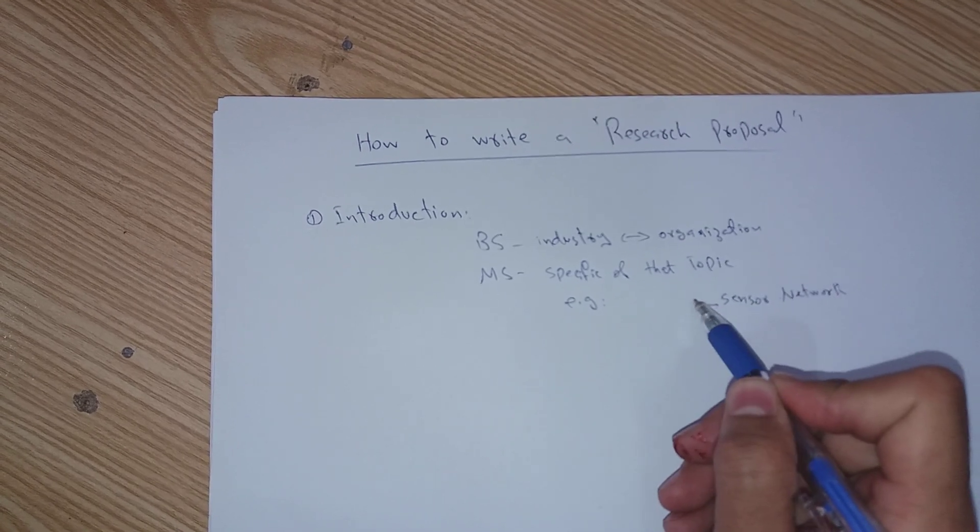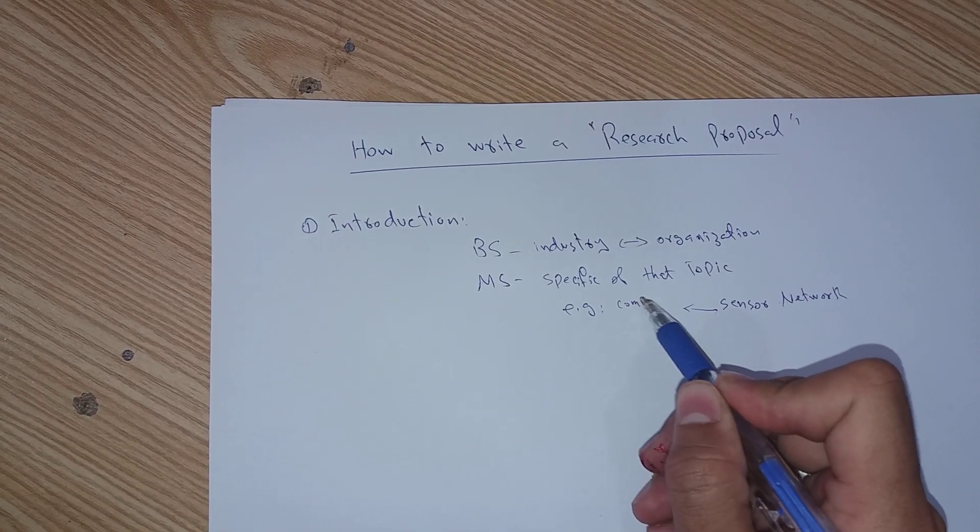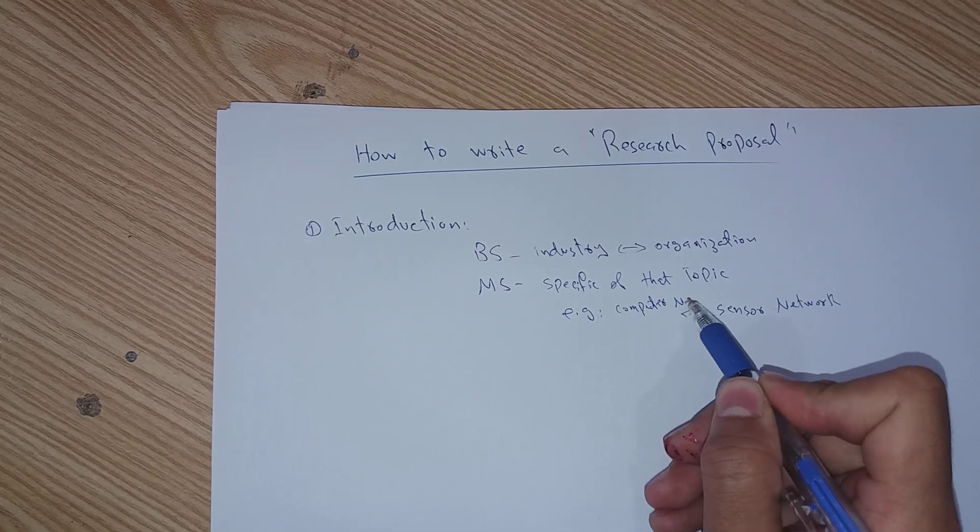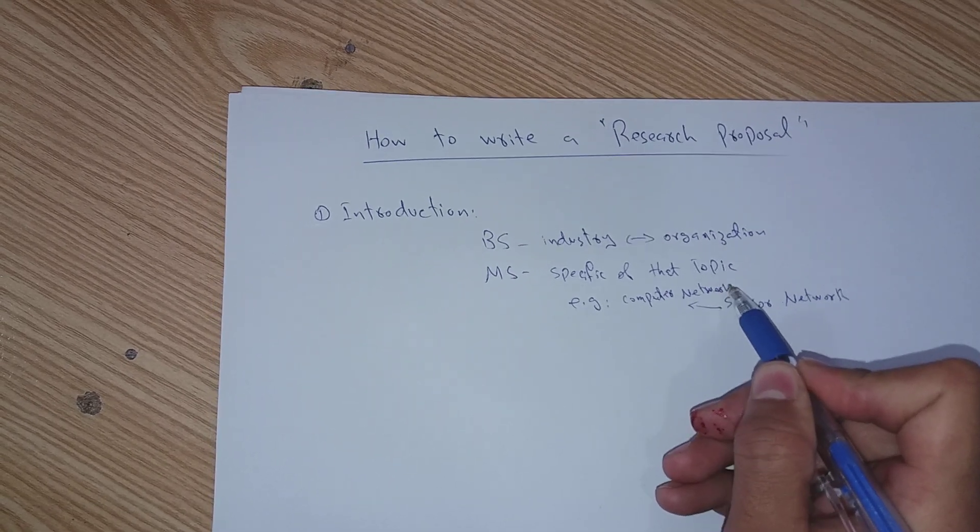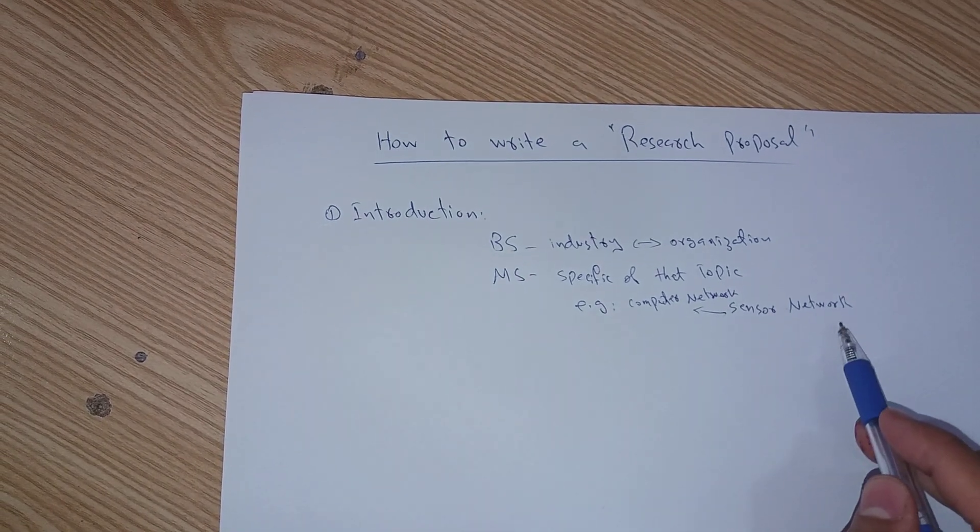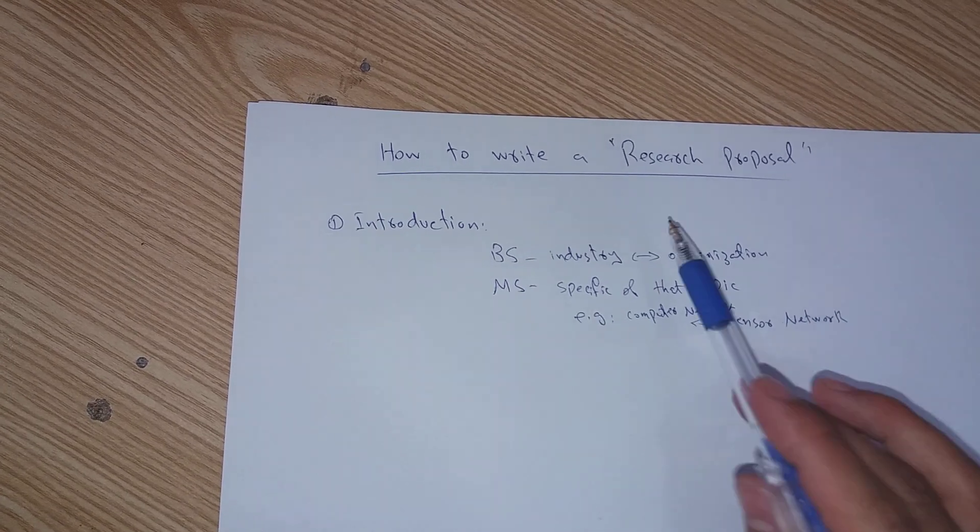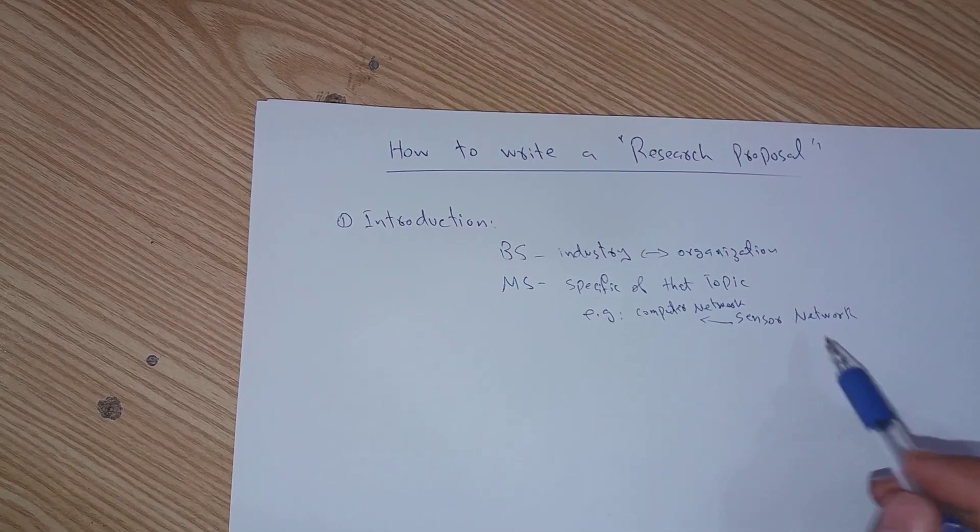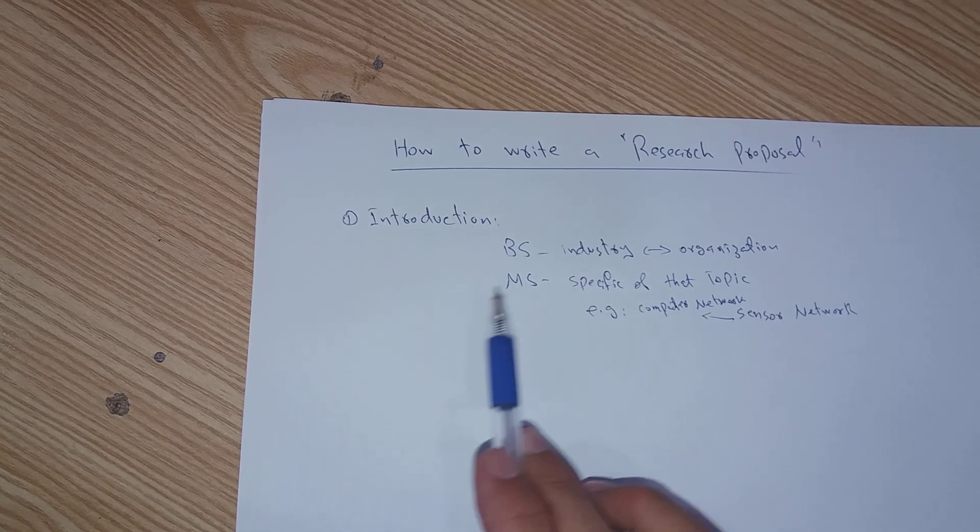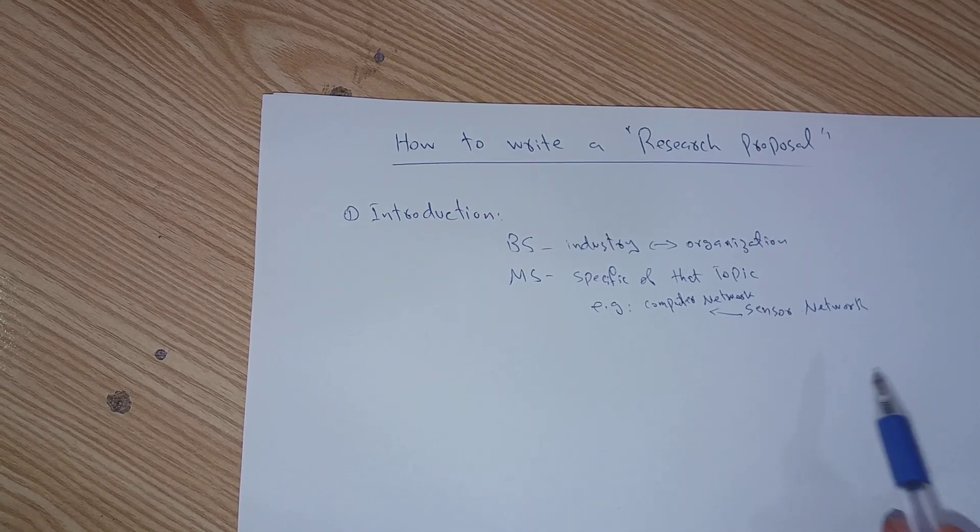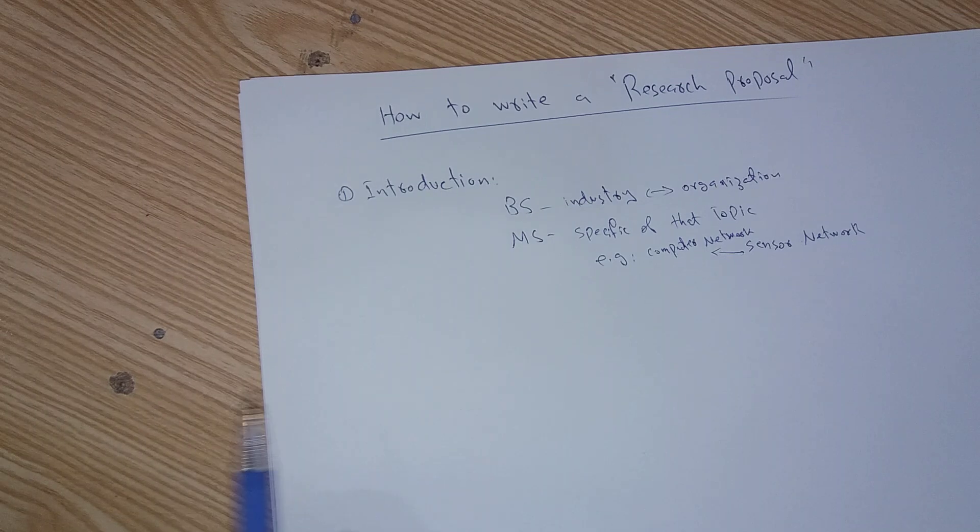I will have to start from the very basic definition of computer network and slowly I will come to my targeted area. Similarly, if you are going to write a proposal for data mining, you will have to start the introduction from database and then come to your targeted area, data mining. So this is the first heading.